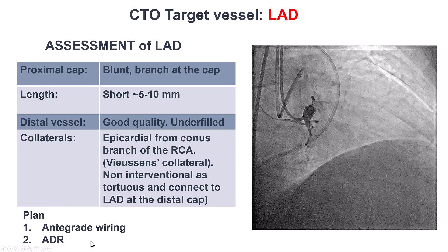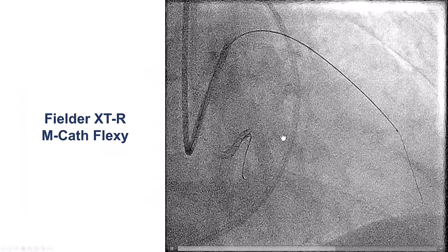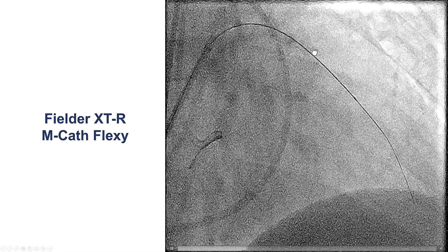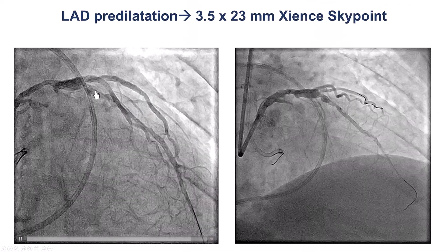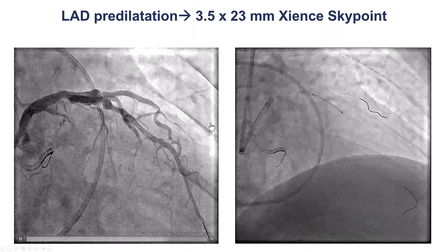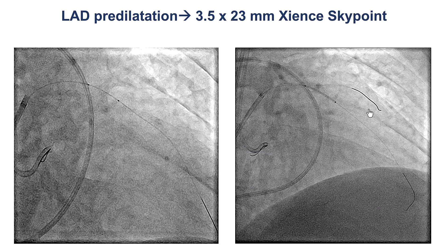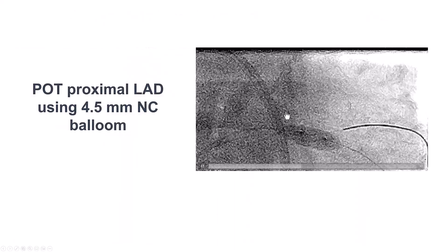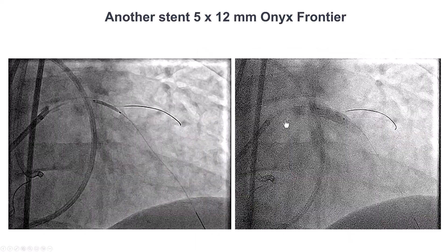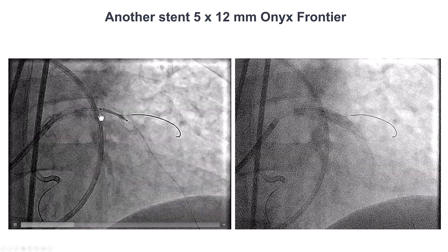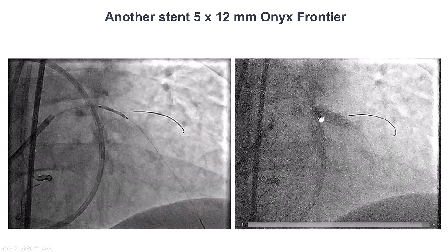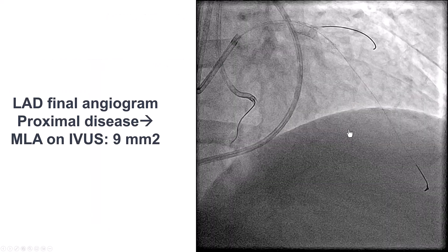If antegrade didn't work, we planned to go with antegrade dissection re-entry. As we had hoped, there was very easy crossing with a Fielder XTR and an MCAT Flexi. The microcatheter was advanced, and we were able to predilate the lesion, restoring good antegrade flow. We placed a 3.5 mm stent that was post-dilated with a 4.5 mm balloon more proximally. By IVUS, the vessel was fairly large and aneurysmal in that segment, so we ended up placing a 5 mm stent, which provided a nice result.